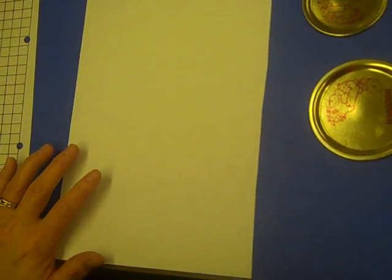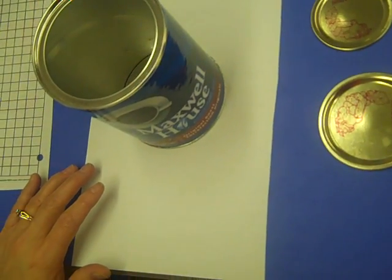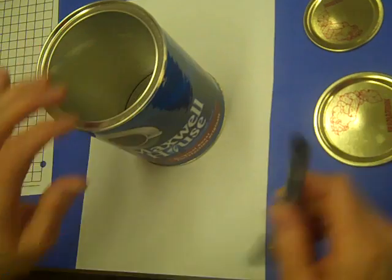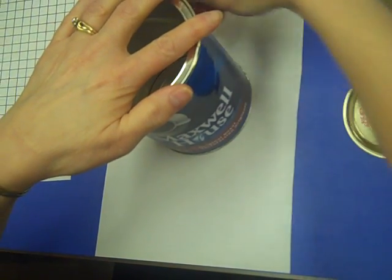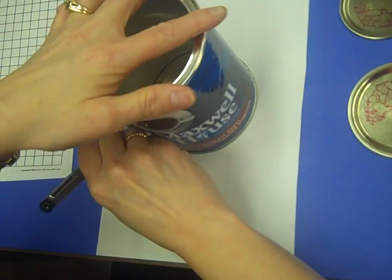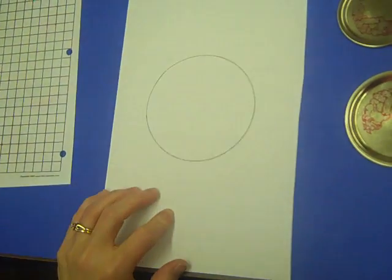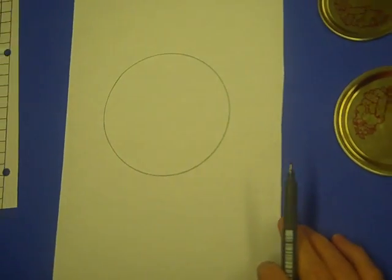So what we might start with first is taking a can. And we're just going to draw a circle around it. And then we could lay our grid sheet on top of it.